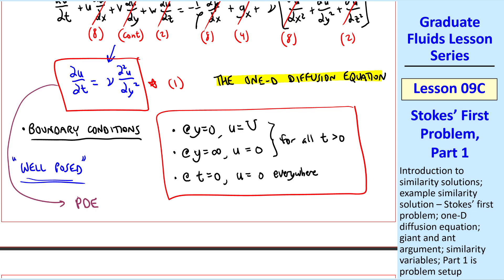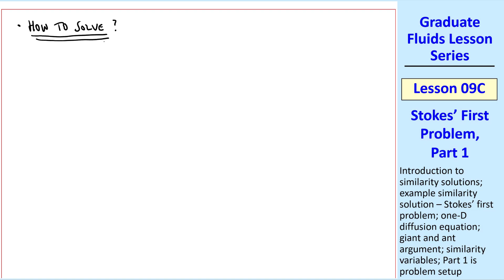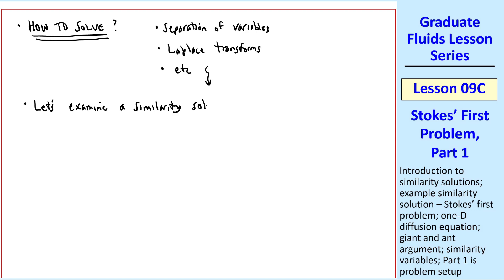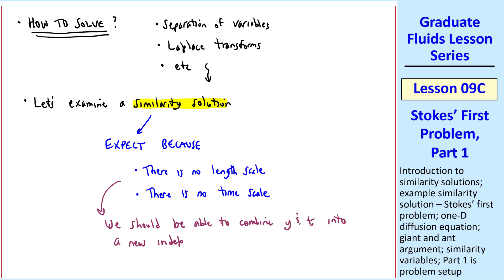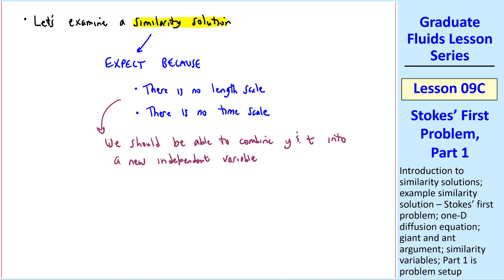This is a partial differential equation since u is a function of both y and time. We could solve it by separating variables, Laplace transforms, or other techniques. But instead let's examine a similarity solution. We expect one because there is no length scale in this problem — the wall is infinite and no x location is special — and there is no time scale since we have no periodicity or oscillation. So we should be able to combine y and t into a new independent variable, reducing the number of independent variables by one, which was our definition of a similarity solution.